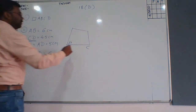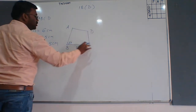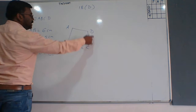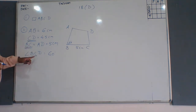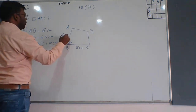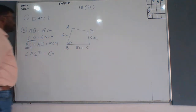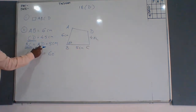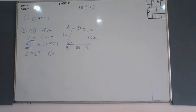In the rough diagram, BC is the base. The sequence ABCD must remain the same — do not interchange the sequence. BC is 5 cm, angle C is 60 degrees, AB is 6 cm, CD is 4.5 cm, and AD is 5 cm. This is the given information for our construction.